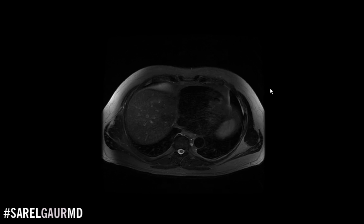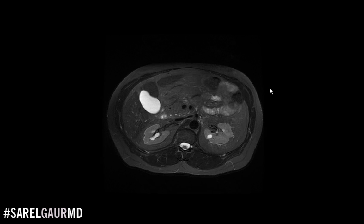Scrolling down to the next set, again I'm asking: is this T1 weighted or T2 weighted? My eye is picking up a lot of bright signal here, and there's some signal in the gallbladder, the calyces, and fluid around the spinal cord. So I know immediately this is a T2 weighted image. Is it fat saturated? Yes — I'm looking at the subcutaneous fat here, and that fat is low in signal, so this is a T2 weighted, fat saturated image.